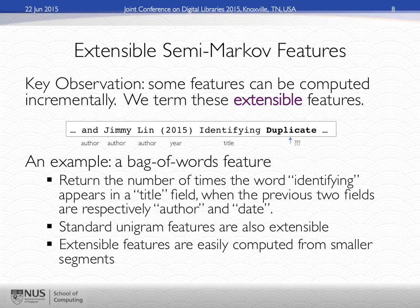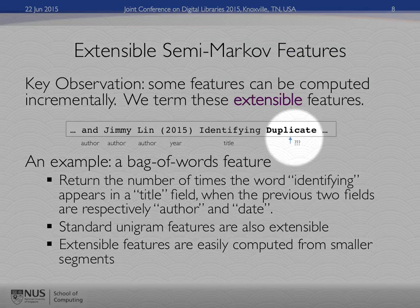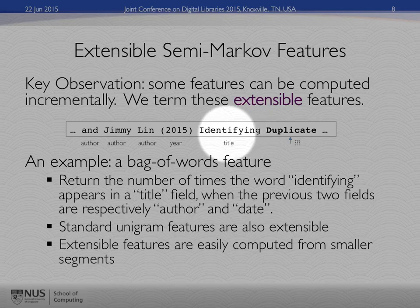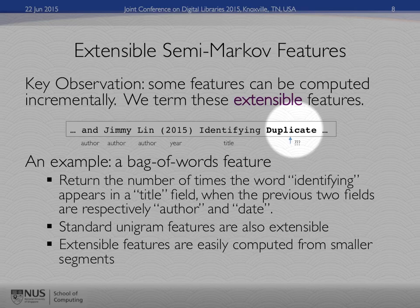Features that we can compute incrementally include bag-of-words features. For example, I'm looking at the current word 'duplicate.' In my feature inventory, a feature says: count the number of times that the word 'identifying' appears in this prospective title field if the previous two fields were respectively author and date. In the last word, I found 'identifying,' so that feature count is already one. When I move to the next word, I don't want to recompute everything from scratch — I just want to use the result from the last observation and increment it. Since 'duplicate' is not the word 'identifying,' I can just reuse the last feature's value.